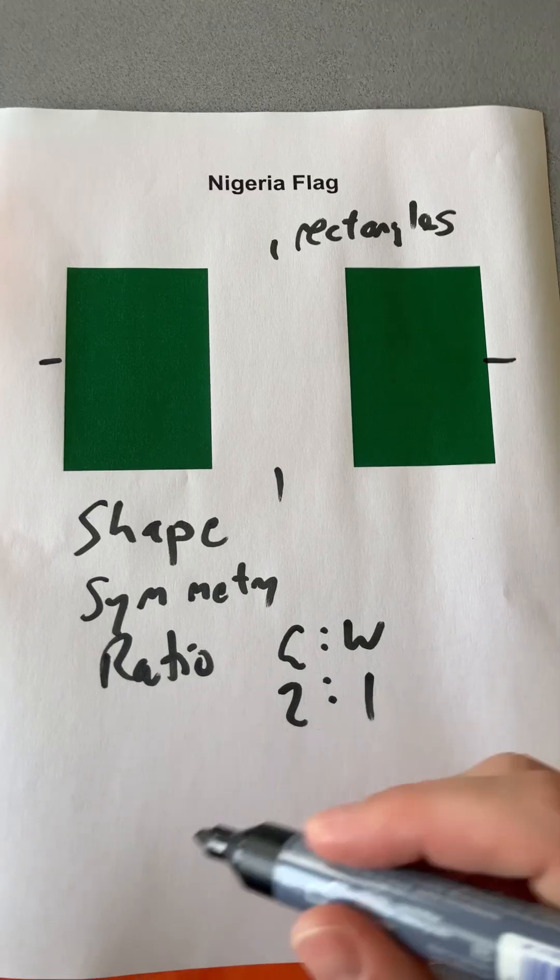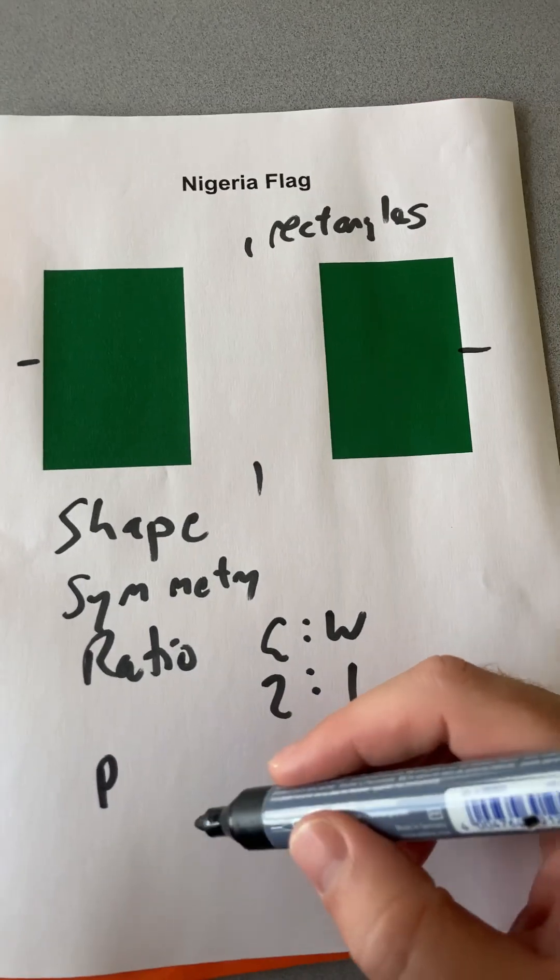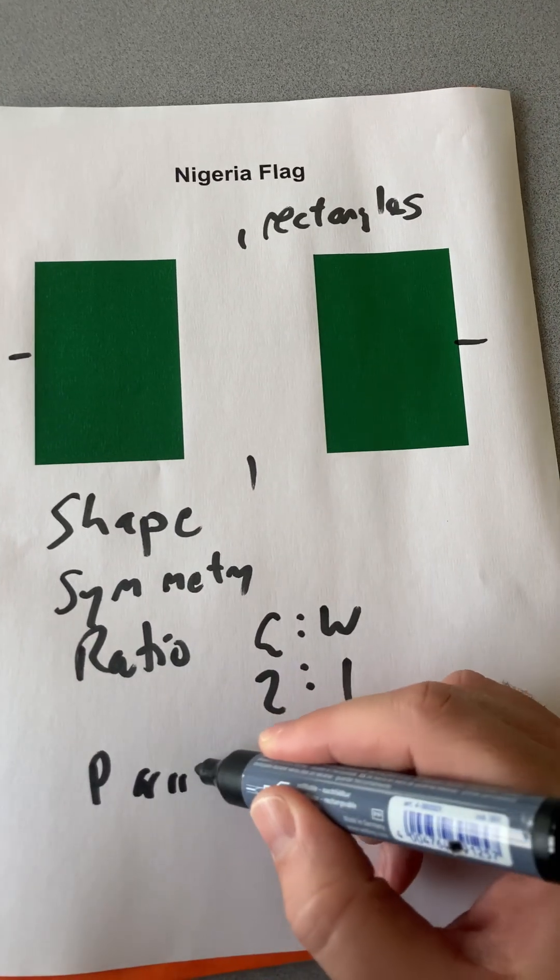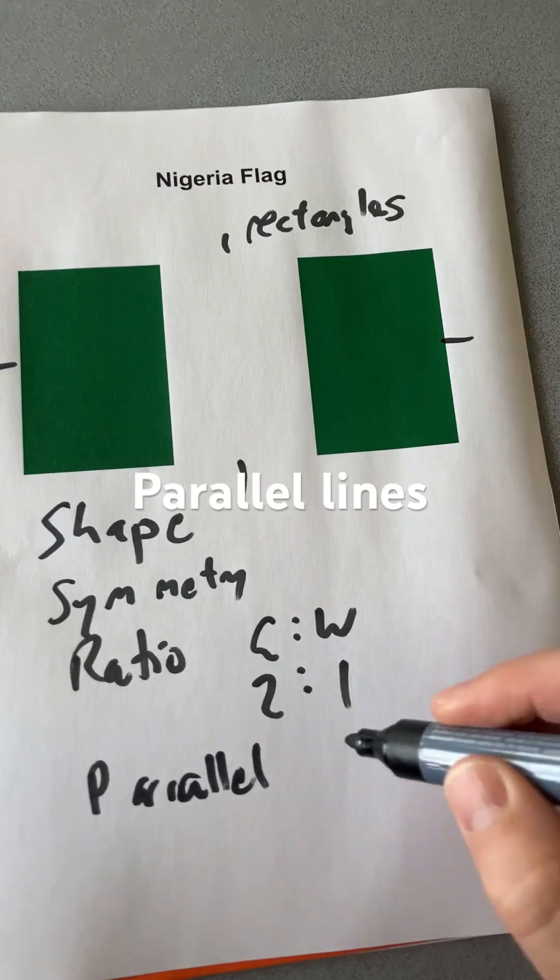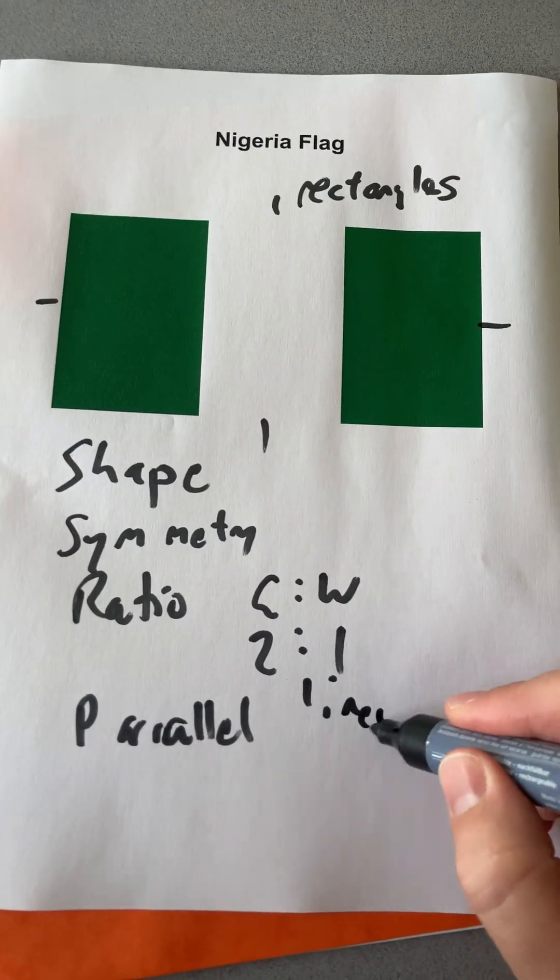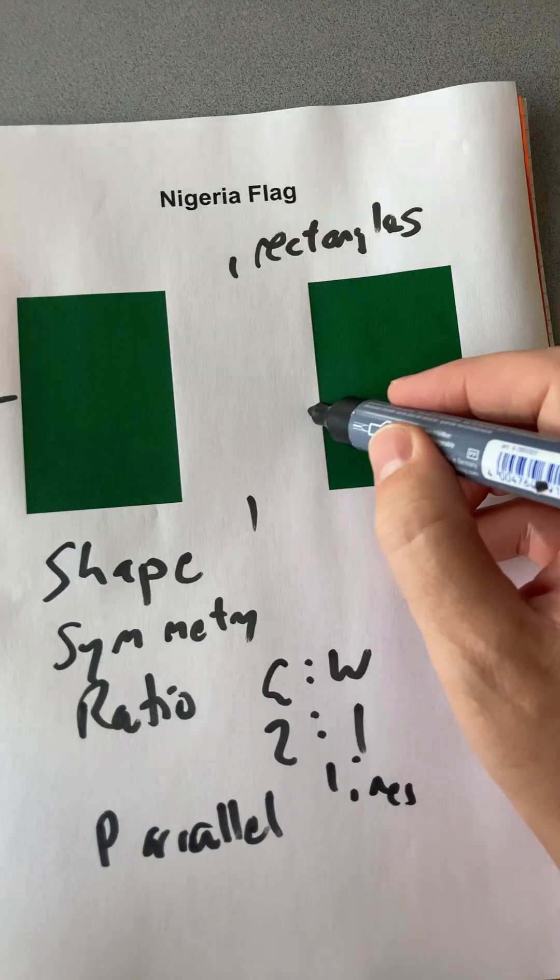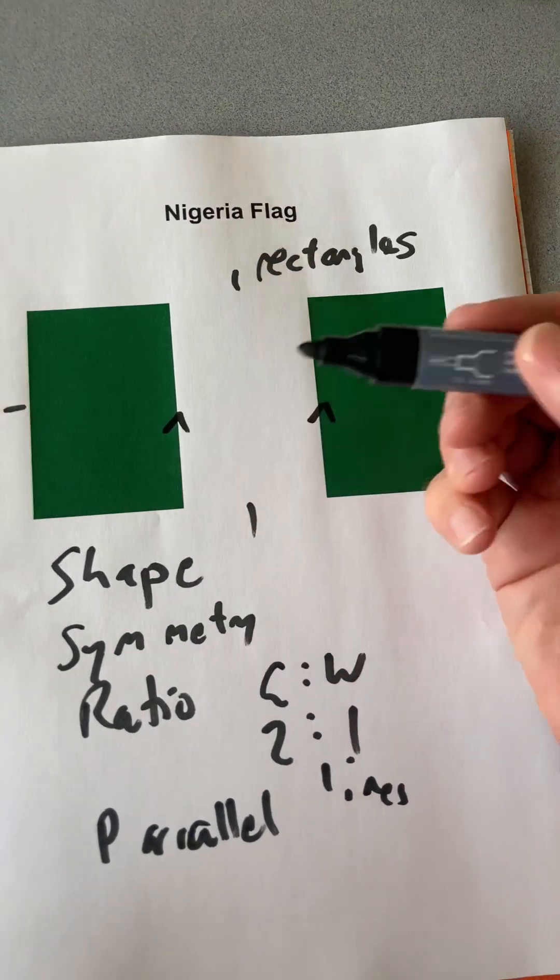And then we also have, like the other flags we've looked at so far, we have parallel lines. I'll mark those with these arrow lines there.